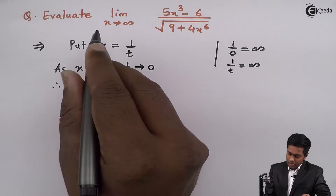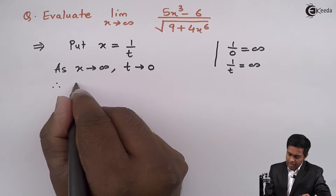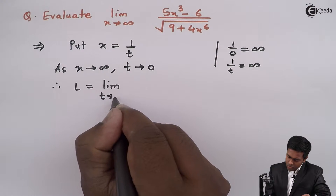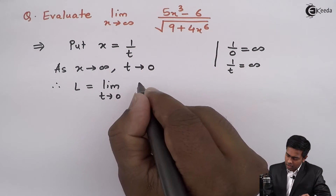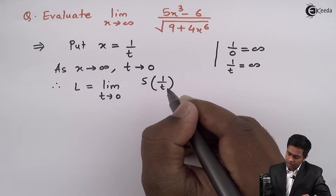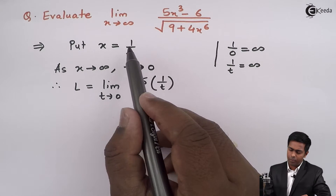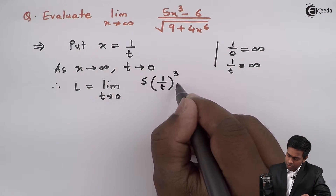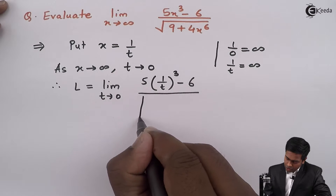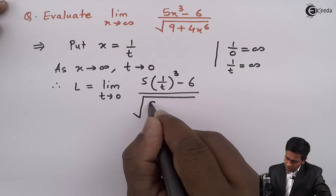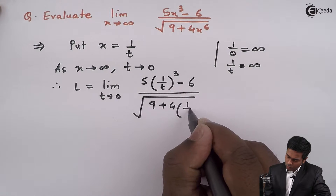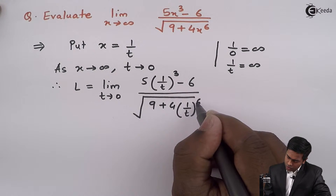Let us call this limit L. So L equals limit t tends to 0 of 5 into (1/t) whole cubed minus 6, all divided by the square root of 9 plus 4 into (1/t) whole raised to 6.